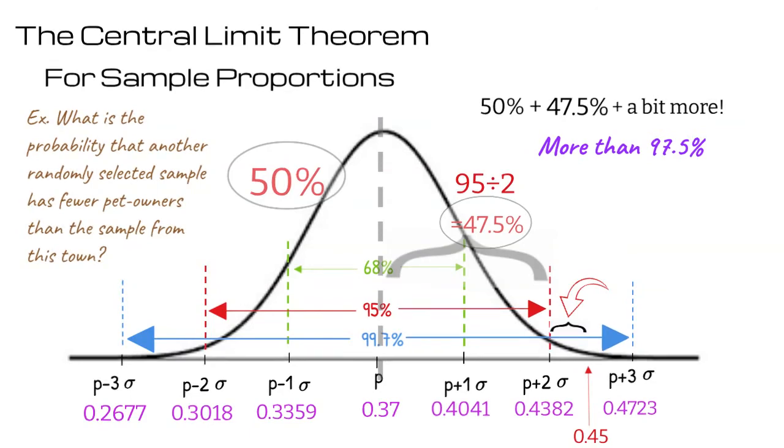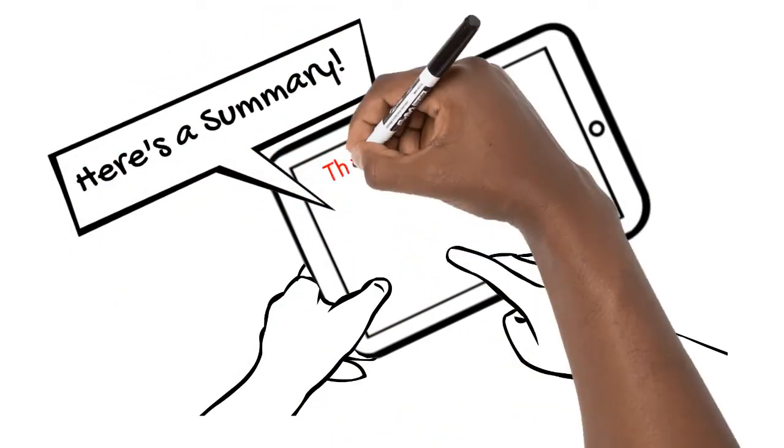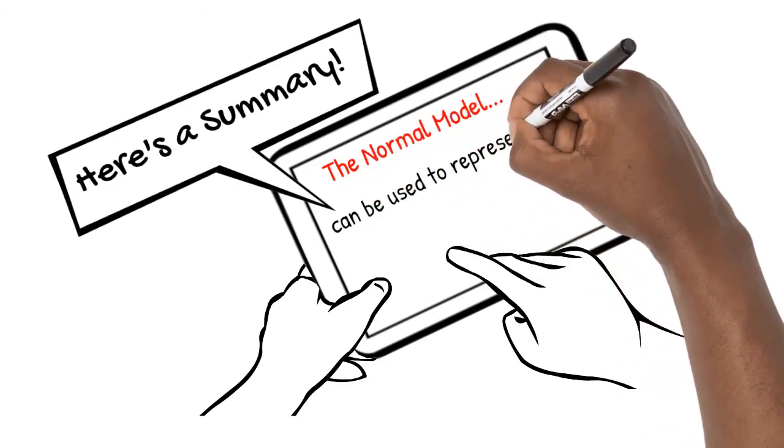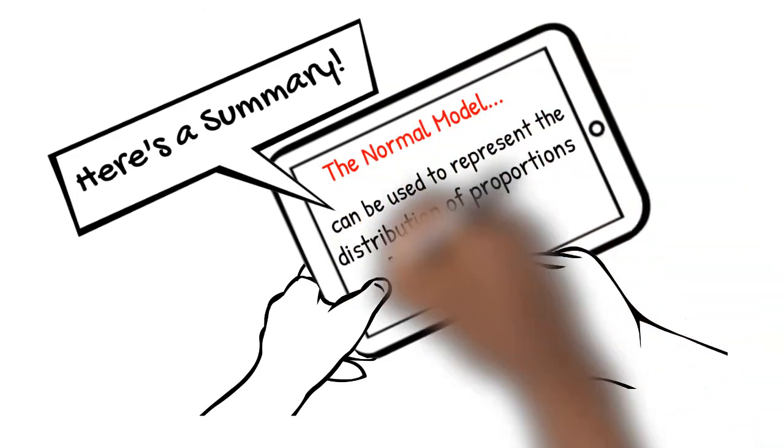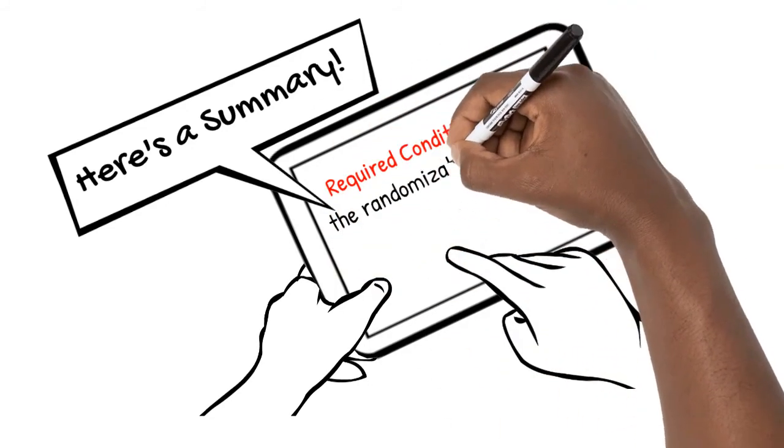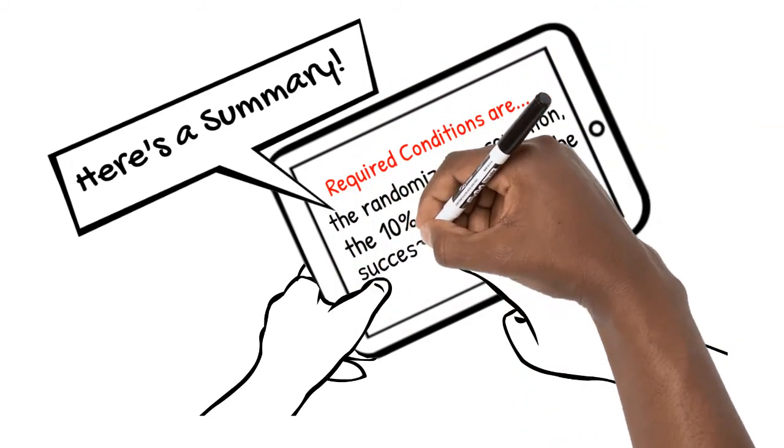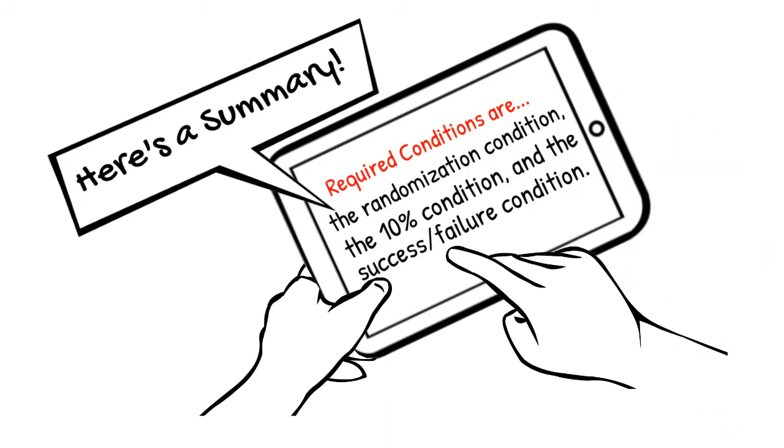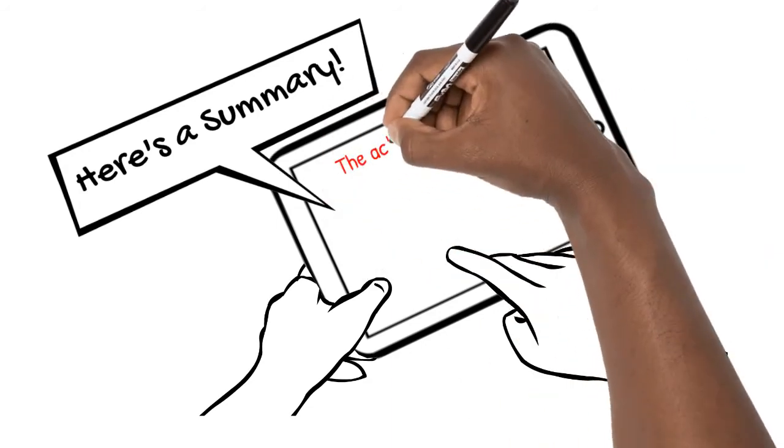Here's a summary of what we've learned. The normal model can be used to represent the distribution of proportions for several samples. Required conditions are the randomization condition, the 10% condition, and the success-failure condition.